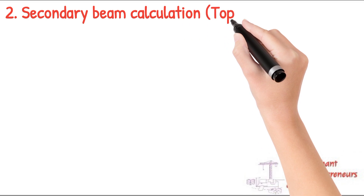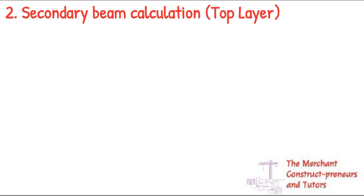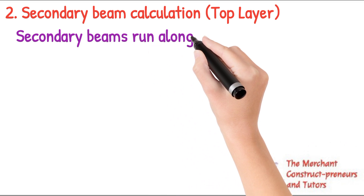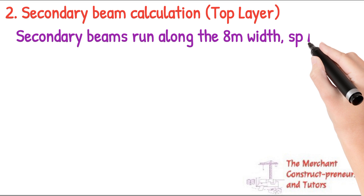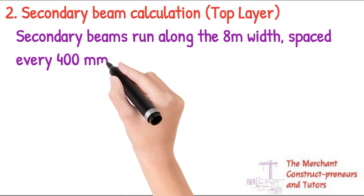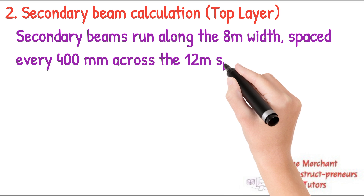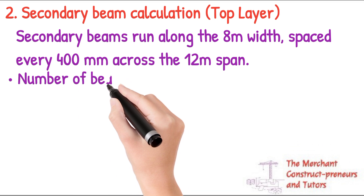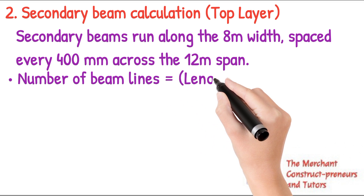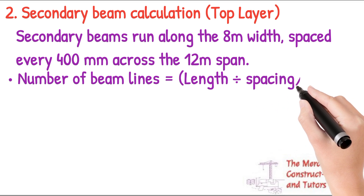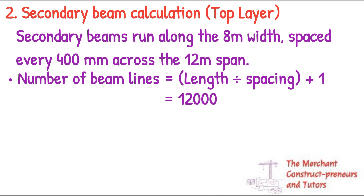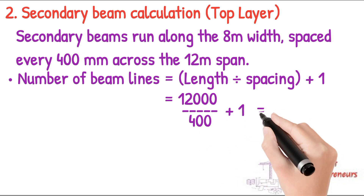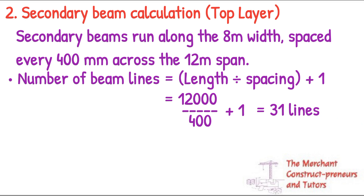Now for the secondary beam calculation — that is the top layer, the ones the plywood sits on. These are spaced at 400 millimeters and run along the 8-meter width, spaced every 400 millimeters across the 12-meter span. The number of beam lines is length divided by spacing, plus 1: 12,000 millimeters divided by 400 millimeters, plus 1, giving us 31 lines.